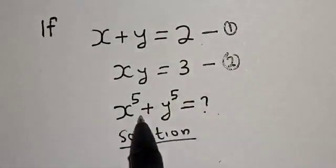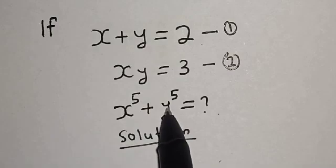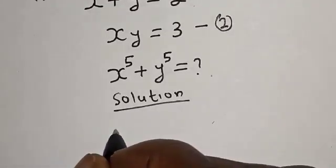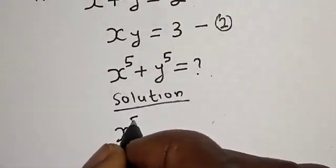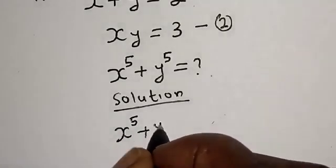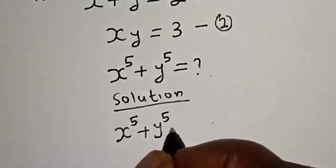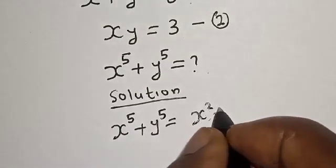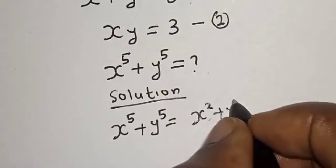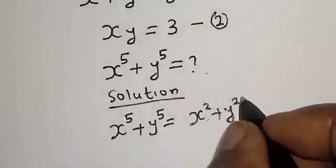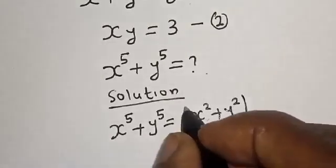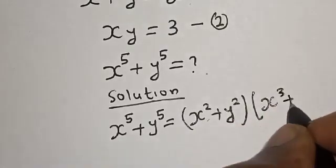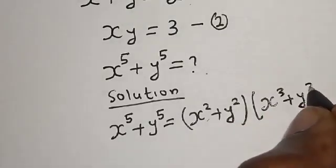In order to find the value of s raised to power 5 plus y raised to power 5, let's simplify this. We have s raised to power 5 plus y raised to power 5 is equal to s squared plus y squared, multiplied by s raised to power 3 plus y raised to power 3.